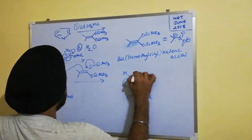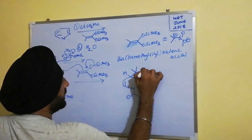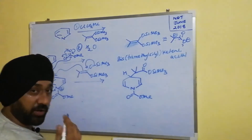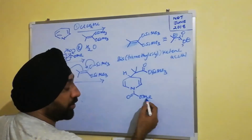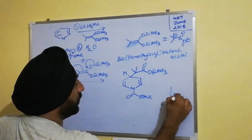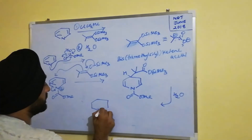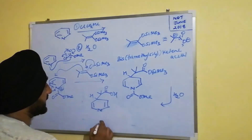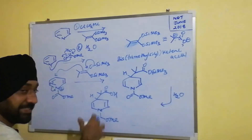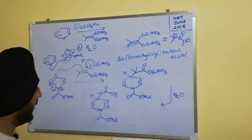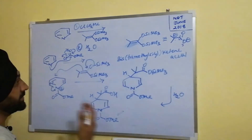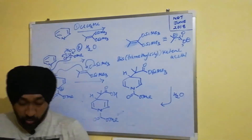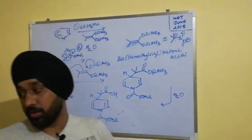The bis(trimethylsilyl)ketene acetal then attacks this activated position. After the ring attack and release of the positive charge, we end up getting dihydropyridines with two methyl groups and an OTMS group. In the final step, water cleaves the silyl ether but does not hydrolyze the ester, giving a dihydropyridine product with an acid and ester functionality. This is the correct option for this question.